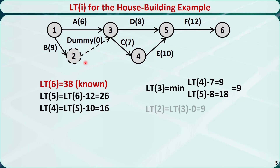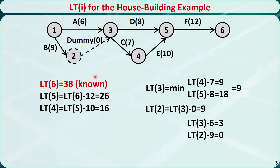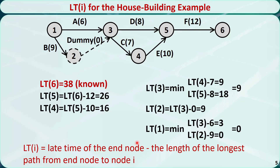For node 2, the late time equals the late time of node 3 minus the duration of the dummy activity, which is 9. For node 1, the late time has two options: the late time of node 3 minus the duration of activity A equals 3, and the late time of node 2 minus the duration of activity B equals 0. We pick the smaller value, 0, as the late time for node 1. As a general rule, the late time of node i equals the late time of the end node minus the length of the longest path from the end node to node i. For example, for node 3, the longest path from the end node is 6→5→4→3 with length 12 plus 10 plus 7, equal to 29. The late time of end node 6 is 38, and 38 minus 29 equals 9, which is the late time of node 3.